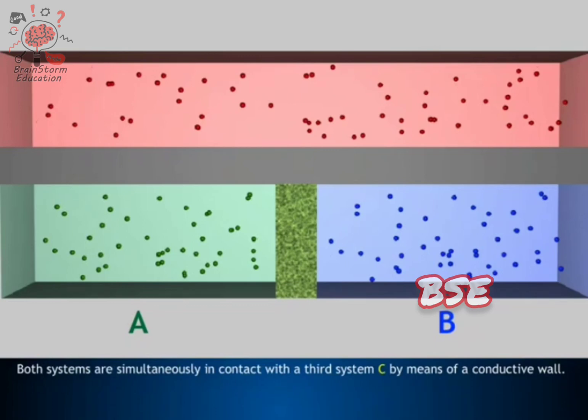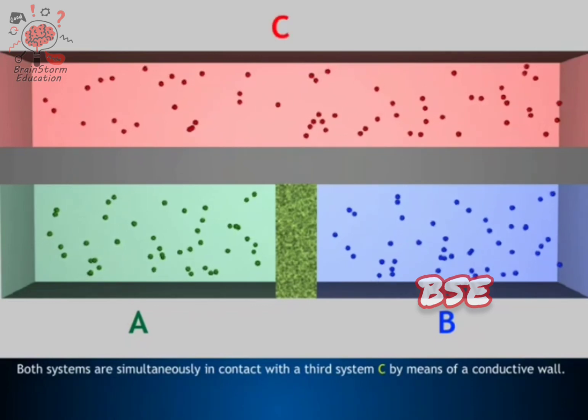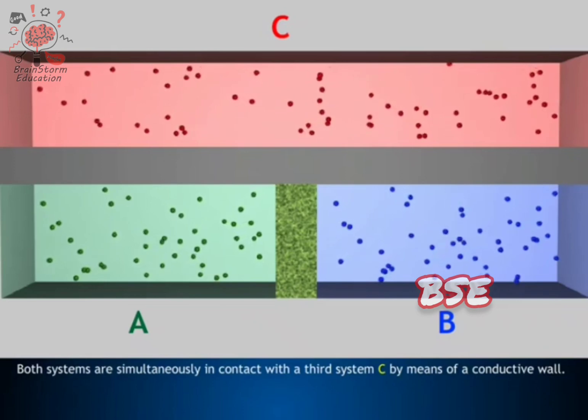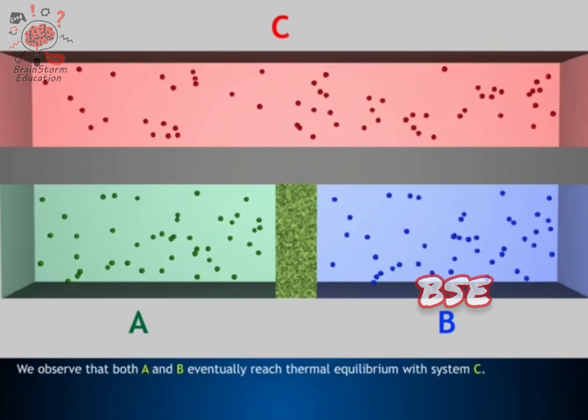Both systems are simultaneously in contact with the third system, C, by means of a conductive wall. We observe that both A and B eventually reach thermal equilibrium with system C.